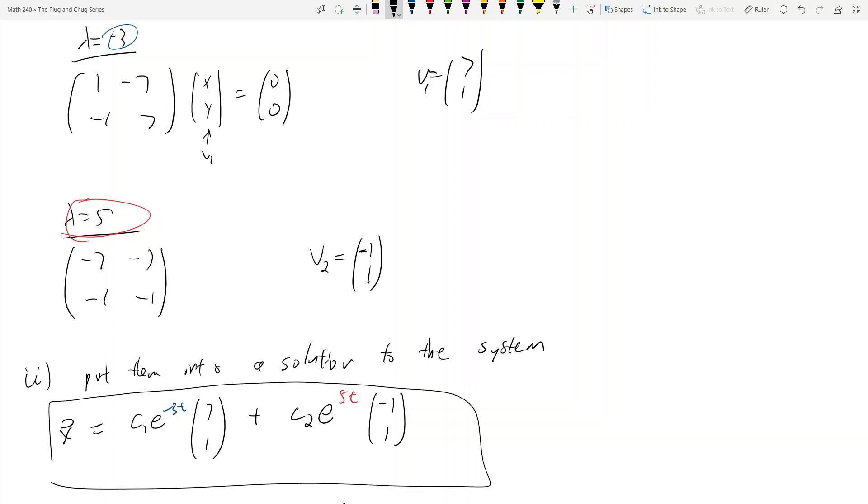This works out very nicely when your matrix is not defective—it has an eigenbasis, a basis of eigenvectors. So it works out very nicely this way.